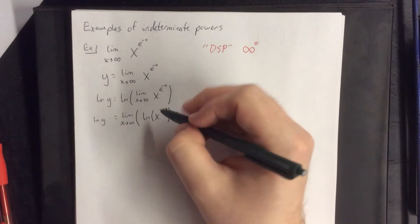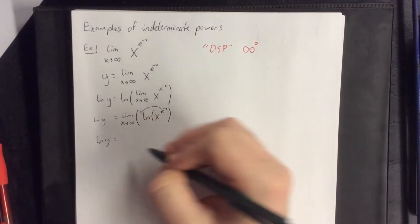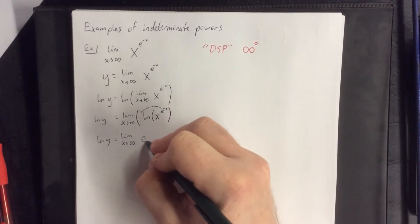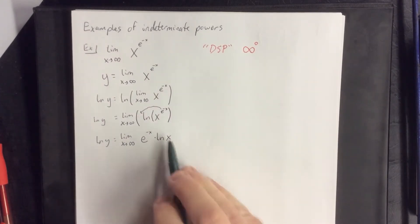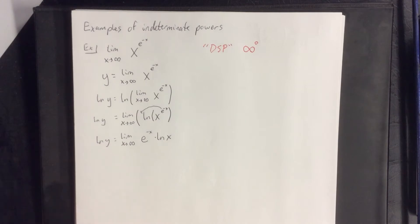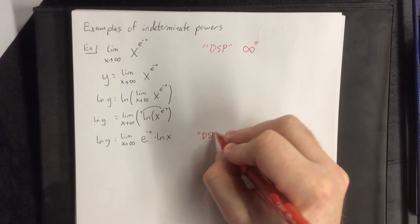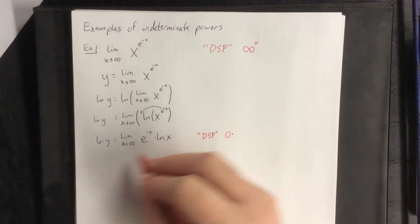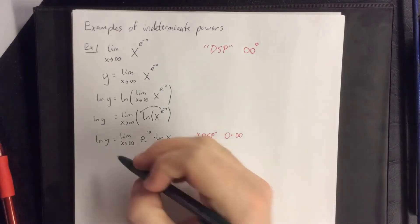The reason we took the natural log is so we can take this power and move it down front. This gives us the limit as x goes to infinity of e to the negative x times the natural log of x, still equal to the natural log of y. This is now an indeterminate product — e to the negative x approaches 0, and the natural log of x approaches infinity as x goes to infinity.